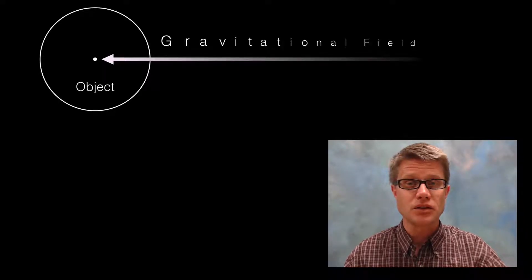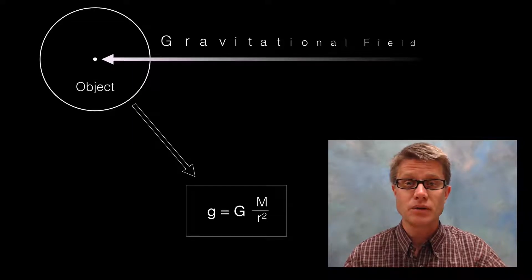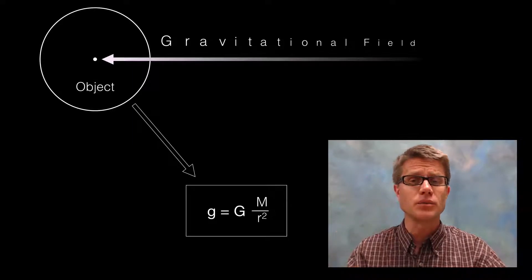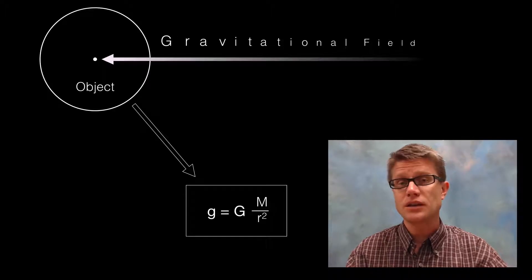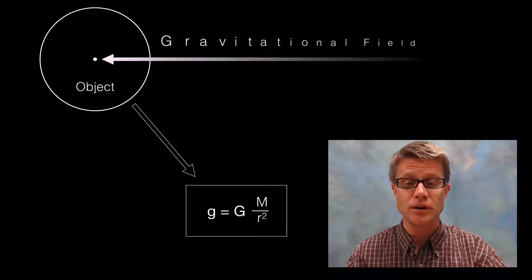If you want to calculate the gravitational field strength, this equation works. It was developed by Sir Isaac Newton. And it really only has those two things that we saw in that video: the mass of the object and then the radius or the distance between that object and a point.